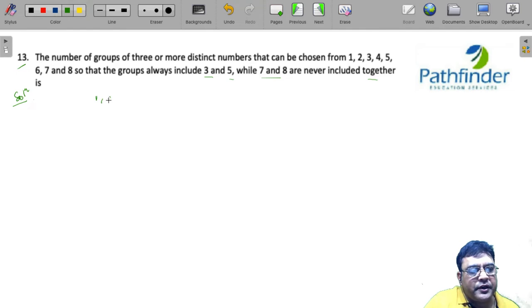Now, we have the digits 1, 2, 3, 4, 5, 6, 7, 8. There are 8 digits and we have a condition that the group should always include 3 and 5 but never include 7 and 8 together. And the second condition is we need 3 or more distinct numbers.